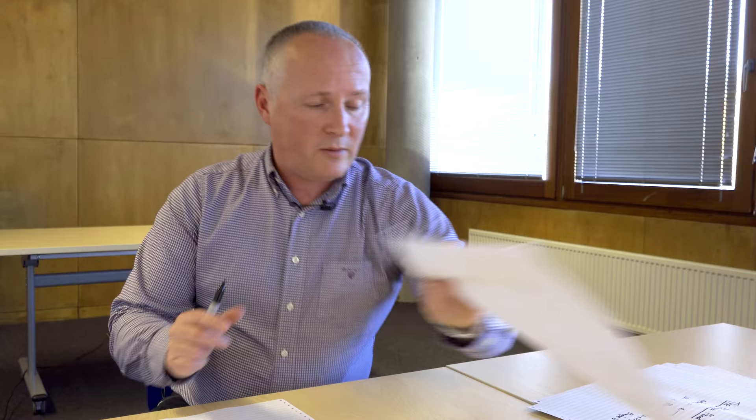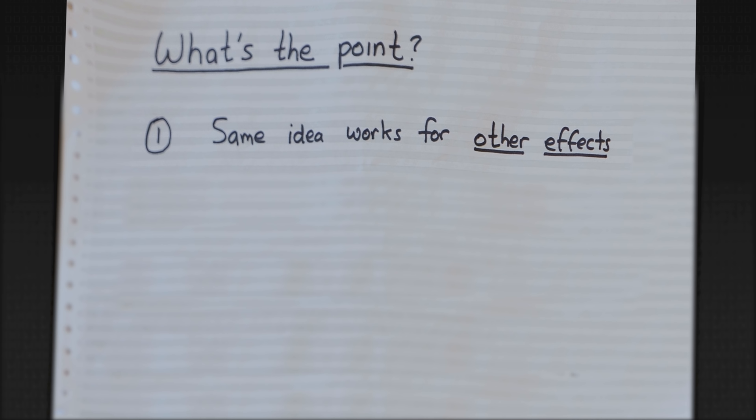So what we've essentially done is rediscovered the Maybe monad. What's the point of all of this? There are four points to emphasize. First: the same idea works for other effects as well — it's not specific to Maybe, which captures failure. The same idea works with other kinds of effects like input-output, mutable state, reading from environments, writing to log files, non-determinism, and many more. Monads give you a uniform framework for thinking about programming with effects.